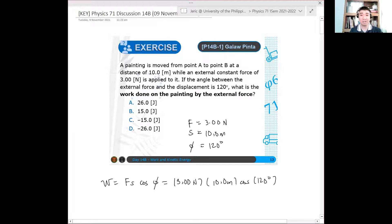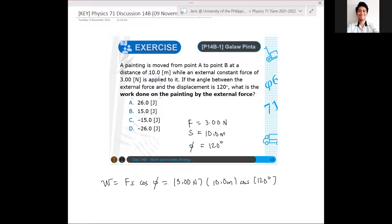So since the angle is greater than 90 degrees, what can we expect about the sign of the work? Ano mangyayari sa work niya? Positive, negative, or zero? Negative. Yes, negative.